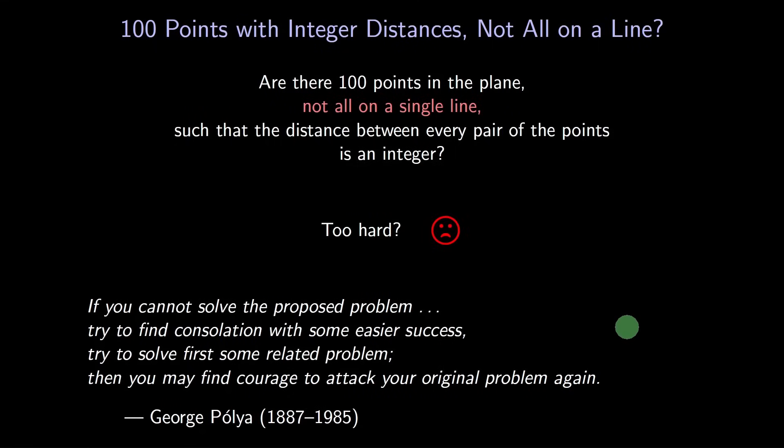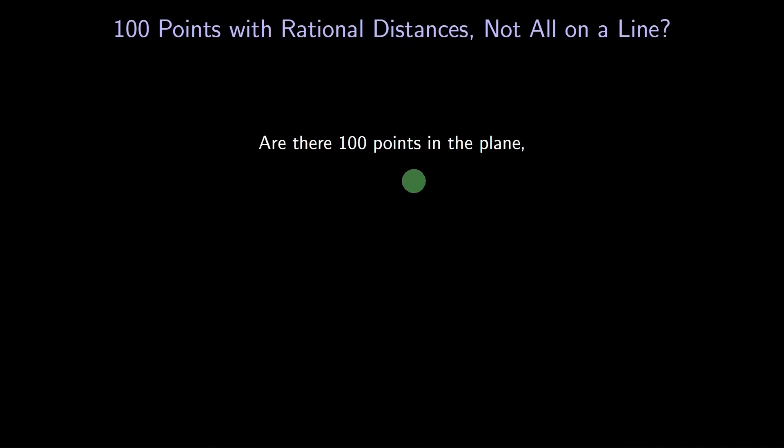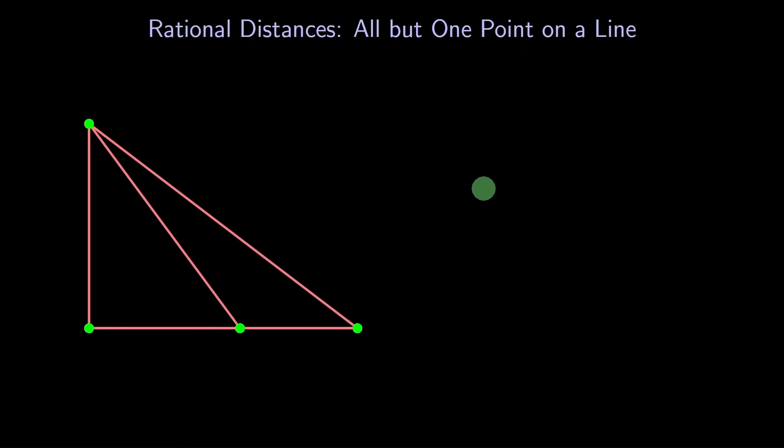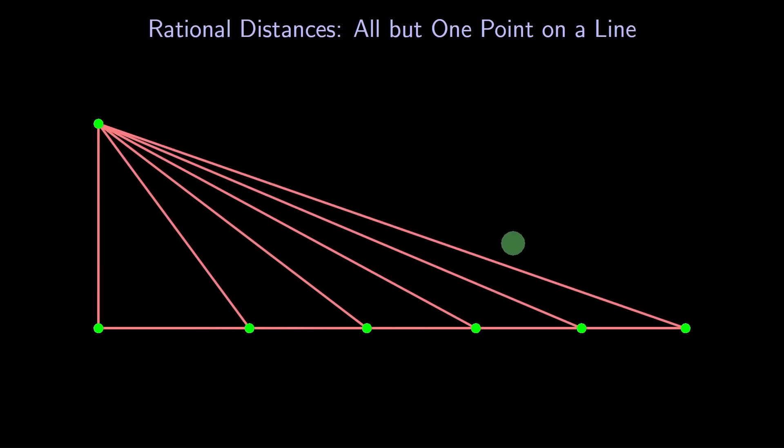One thing that made our problem challenging was that all the distances have to be integers. What if we weaken that condition? Instead of just integers, let's allow rational numbers. Here's the new question. Are there 100 points, not all on the same line, so that every distance is rational? Another reason this problem is challenging is that not all the points can be on the same line, but we can place most of the points on a single line. Let's try an extreme version of that. All the points are on the same line except for one. It's a bunch of triangles stacked within each other. Let's make them right triangles, since we understand them best.